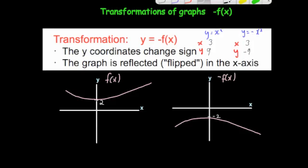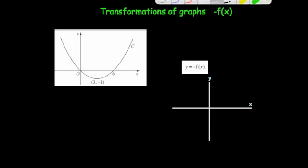Here's an exam question. A graph has been drawn going through the origin, the coordinate (6, 0), crossing the x-axis at 6, and with a minimum point at (3, -1). You've been asked to draw the graph after the transformation minus f of x. This changes the signs of all the heights — if it was positive it'll become negative, if it was negative it'll become positive, so the graph will be reflected in the x-axis.